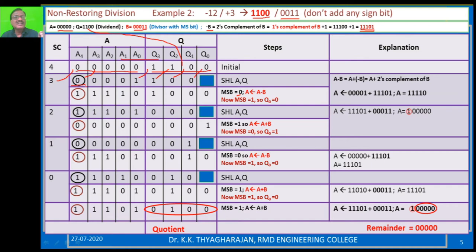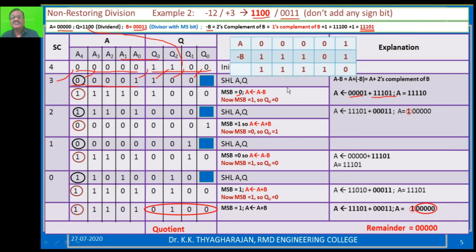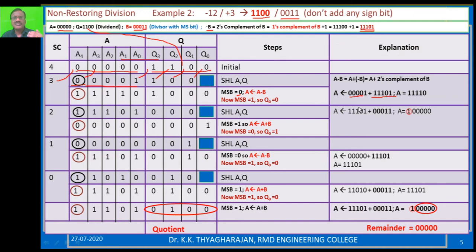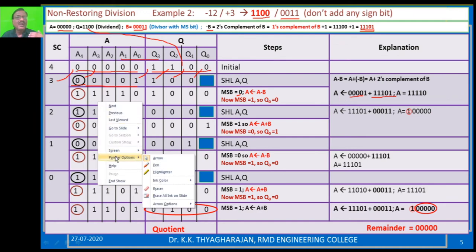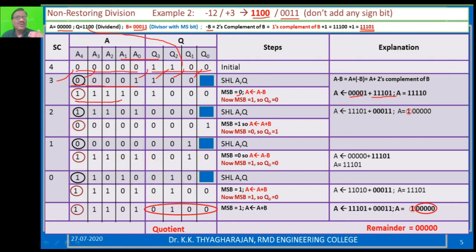A is 00001. Minus B is 11101. You add these two. 1 plus 1 is 2, that means 0 with carry. That carry is added with the next column. Working through all columns, the result is four 1s and a 0 — 11110. That value is stored back in A.